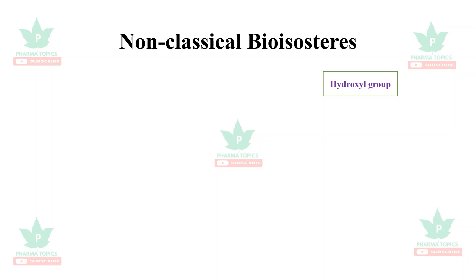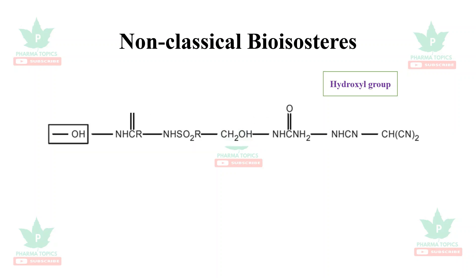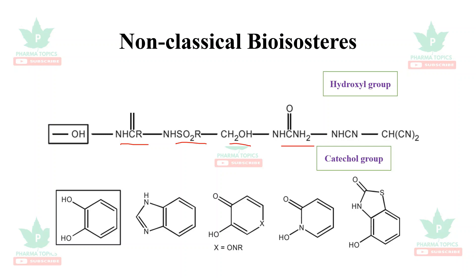The hydroxyl group can be substituted with –NHC(=R)–, –NH₂–, –SO₂R–, –CH₂OH–, –NHC(=O)NH₂–, –NHCN–, or –CH(CN)₂–. Catechol groups, as seen in adrenaline and noradrenaline, can similarly be replaced with bioisosteric substitutions to retain the activity of the catechol group.